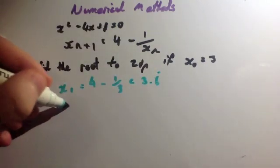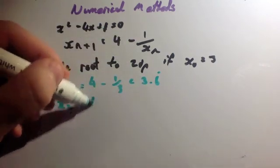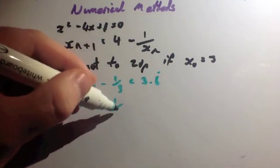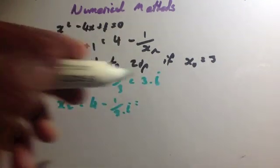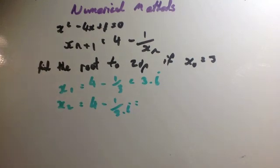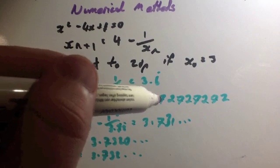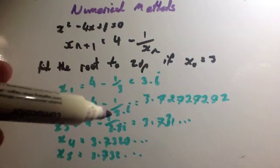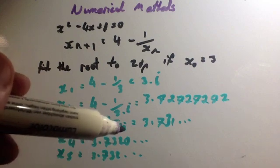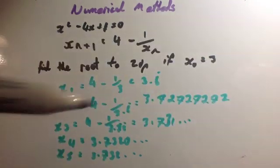Okay, so again x2, you'd put the 3.6 recurring back in here, so you'd get equals 4 minus 1 over 3.6 recurring, etc. I'm just going to work out the rest of these values now and we'll see what we get. Okay, so I've worked that out to be 3.727272. I've put that back in to get 4 minus 1 over 3.7272 and get 3.731.